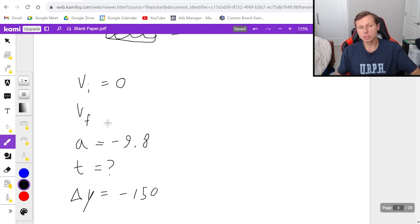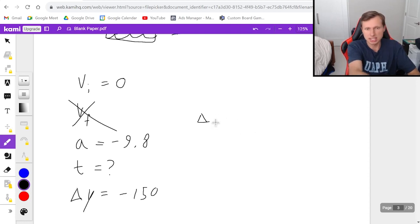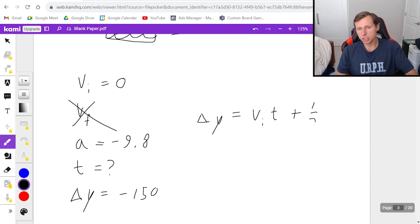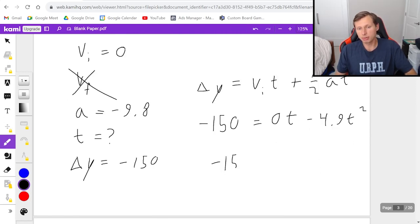And now we just have to use the equation that does not have v final in it. That's going to be this one, delta x, or in this case delta y equals v initial times time plus one half a t squared. And so it looks like negative 150 equals zero times time minus 4.9 t squared. That's after I plug in the one half times 9.8. So that's going to simplify to negative 150 equals negative 4.9 t squared.